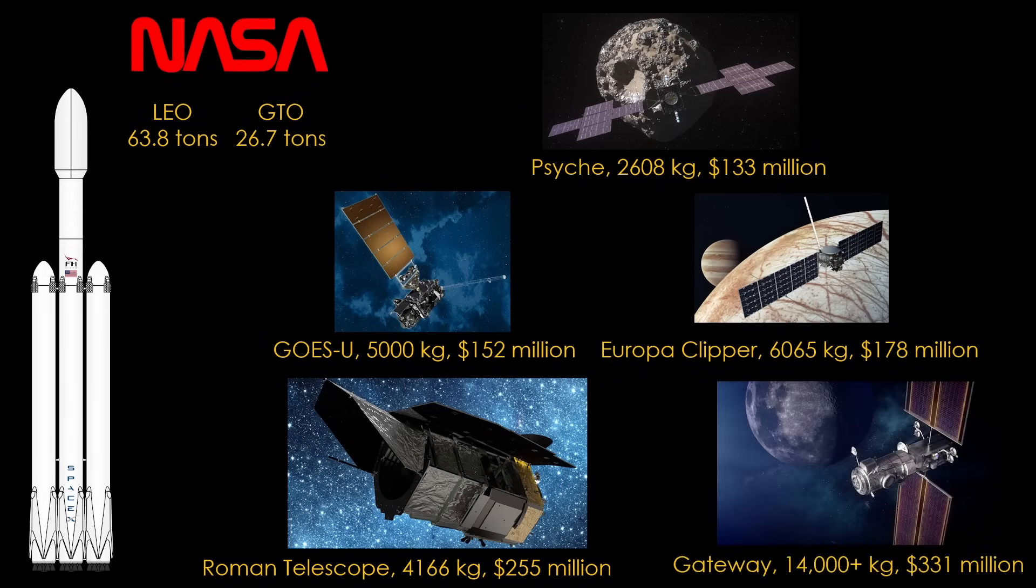And finally, Falcon Heavy will launch the first two modules of the Lunar Gateway space station into a weird elliptical orbit for 331 million. It will mass at least 14,000 kilograms, and the modules will put themselves into the target near rectilinear halo orbit around the moon. This launch is currently scheduled for late 2025.